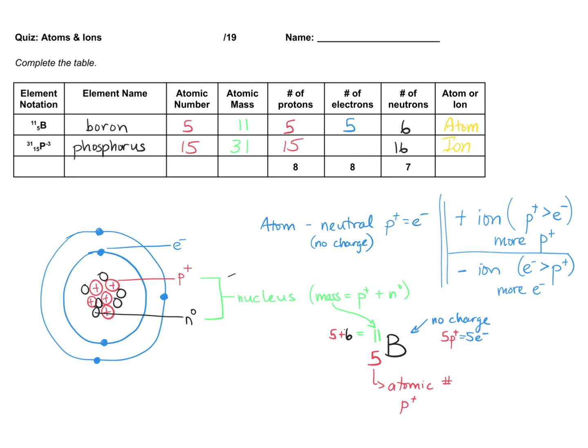So what number should go here so that we have 3 more electrons than protons? If I only have 15, then that's a neutral atom. But if we need to have more electrons, I need to have 3 more electrons.